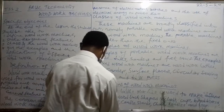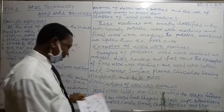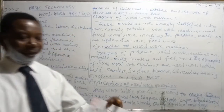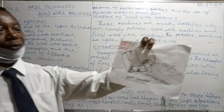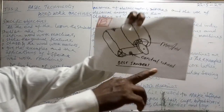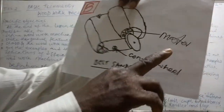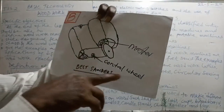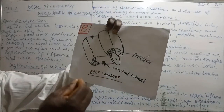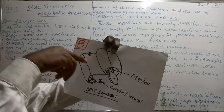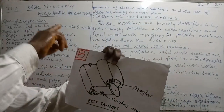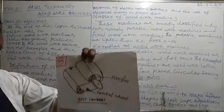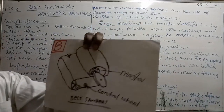Next to it is called the belt sander. The belt sander still has what we call the motor, like I have explained to you, and we have the wheel and the control wheel — they look alike. The electrical connection is not shown in this diagram, but it must be present for the machine to operate.